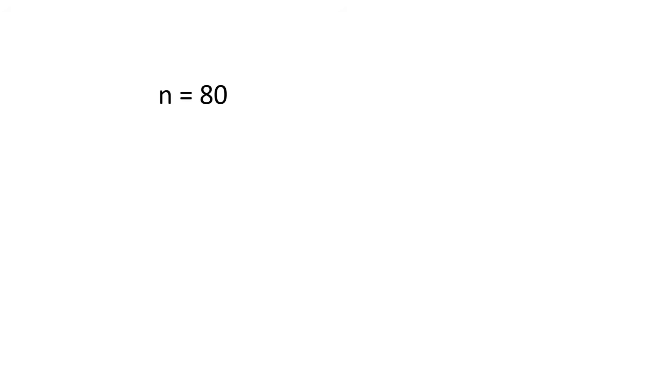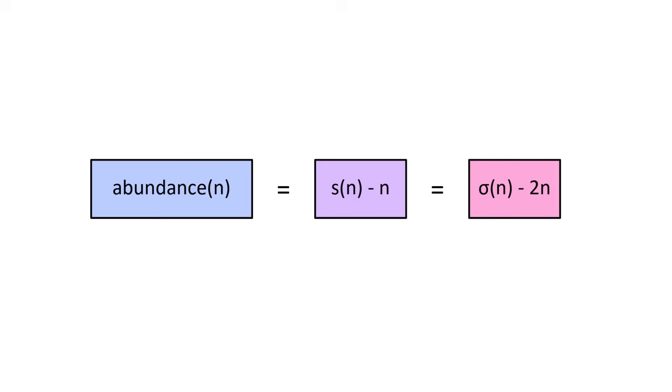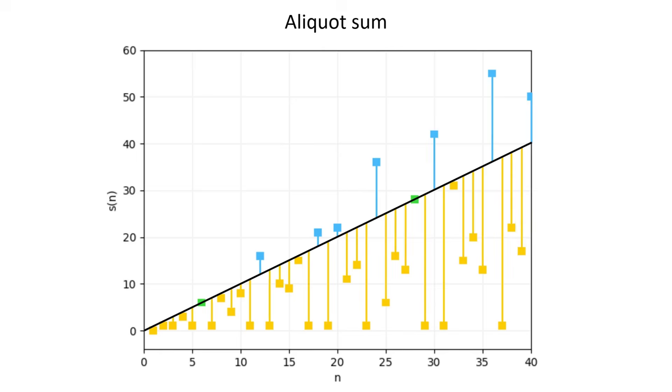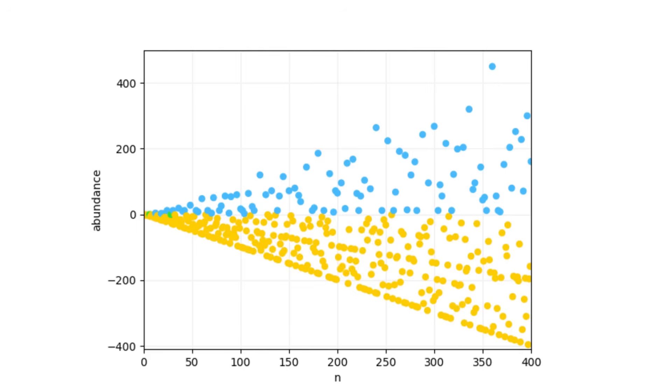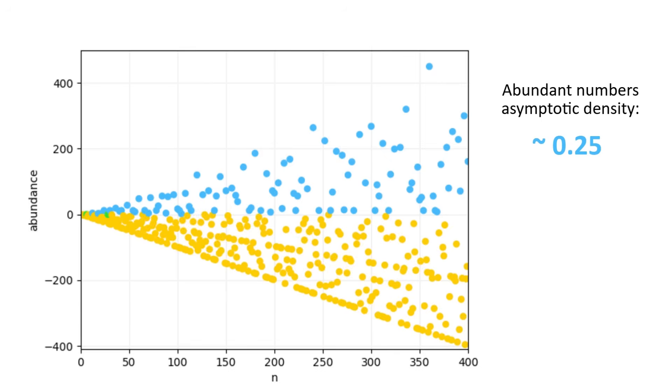Given a number n and its aliquot sum s, you can see how far off from perfection it is by taking the difference between them. This is equivalent to sigma of n minus 2n, and is called the abundance of n. This value is positive for abundant numbers, negative for deficient numbers, and zero for perfect numbers. When we graph abundance, we can see that primes get more and more deficient as you go. But there are still plenty of abundant numbers. In fact, abundant numbers have asymptotic density of about 0.25, which means, in the limiting case, about one-fourth of all numbers are abundant.